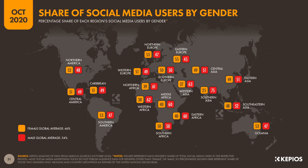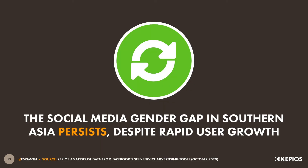However, social media data clearly indicates that the gender gap varies significantly by region. For example, female social media users actually outnumber male users across the Americas and Europe, while gender ratios are relatively evenly balanced in Eastern and Southeastern Asia. But the data tell quite a different story for the Middle East, Africa, and Southern Asia. In particular, Southern Asia shows the greatest imbalance, with male users currently outnumbering female users by a factor of three to one. And this gender gap in Southern Asia has only narrowed by a couple of percentage points in the past two years, despite the overall number of social media users in the region growing by more than 30% over the same period.